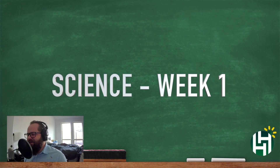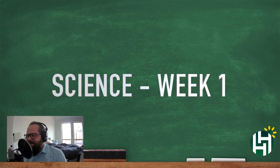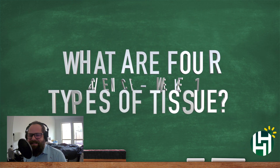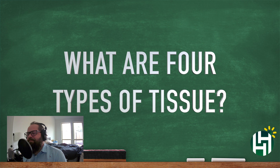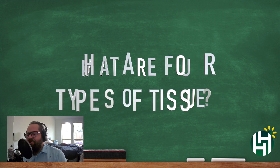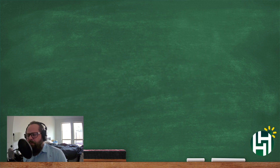Oh boy, here we go. Cycle 3, week number 1. Looking at science. Oh man, this is going to be a good year, everybody. Here's our question right now: What are four types of tissue? Here we go.